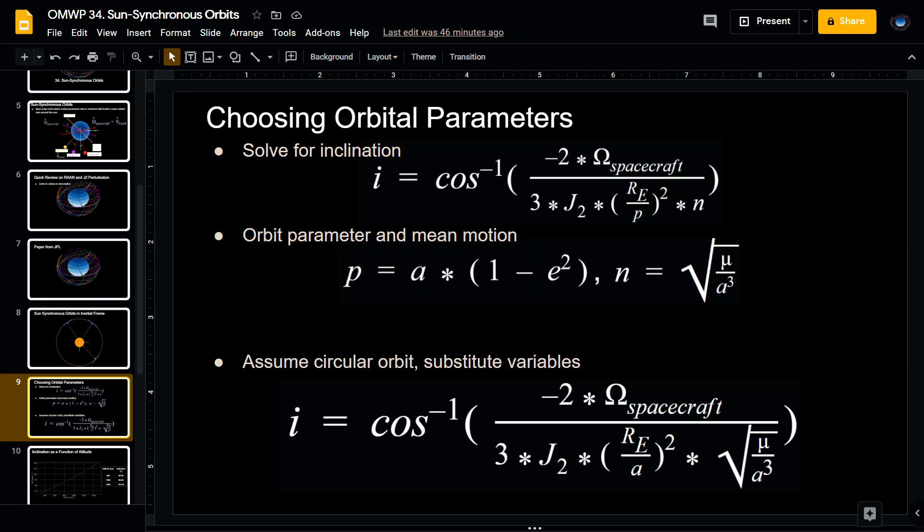The semi-major axis is just equal to the earth radius plus the altitude for a circular orbit. Plugging all those in, assuming a circular orbit, you get this equation, which is the inclination equals the inverse cosine, negative 2 omega dot, 3 times J2, radius of the earth, semi-major axis squared, and then square root of mu over a cubed.